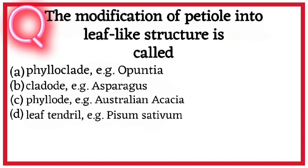Question fifteen. The modification of petiole into leaf-like structure is called A. Phylloclade, e.g. Opuntia; B. Cladode, e.g. Asparagus; C. Phyllode, e.g. Australian Acacia; D. Leaf tendril, e.g. Pisum sativum. So correct answer hai option C. Phyllode, that is Australian Acacia.